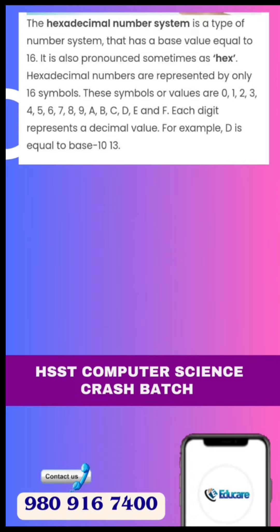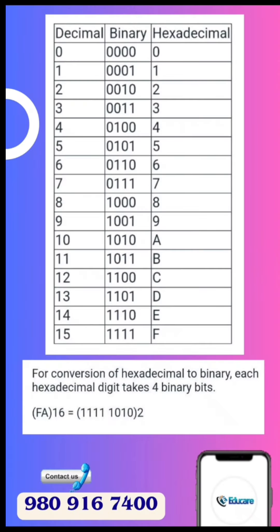Then, 10 to 15 use English alphabets: A, B, C, D, E, F — the capital letters. This is how we do conversions.